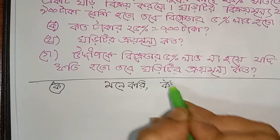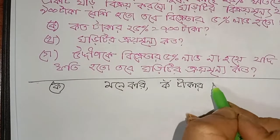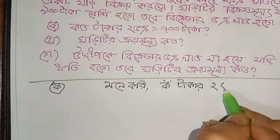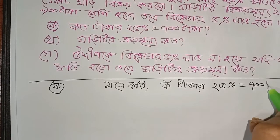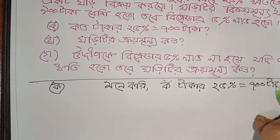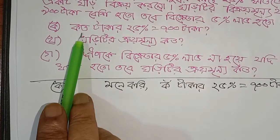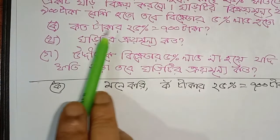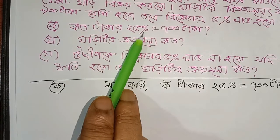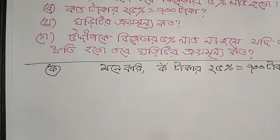35% - কাটাকার 35% জোহনি মট্টা কাটাকাটে কাটাকার 35% পার্সেন্ট।